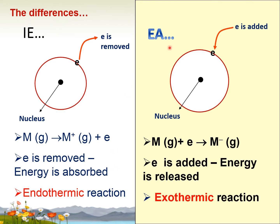While for EA, an electron is added to the atom. When an electron is added, energy needs to be released. When energy is released, it is an exothermic reaction.